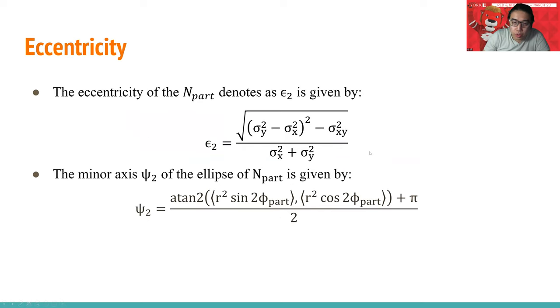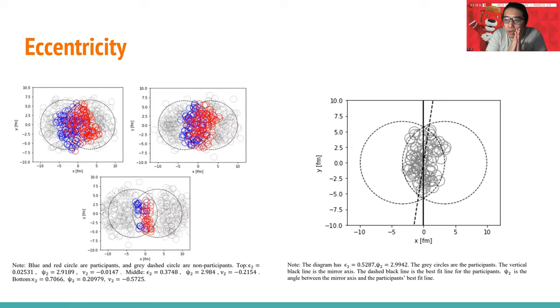The whole point of our project is to look inside deeply into the so-called eccentricity and triangularity. Let me first introduce eccentricity. The eccentricity of the N_part is the number of participants and it's denoted as epsilon 2. It has this relationship. The sigma x is the standard deviation on the x-axis and sigma y is the standard deviation on the y-axis. This phi 2 we will explain in more detail later on. These photos help you to understand what is eccentricity.